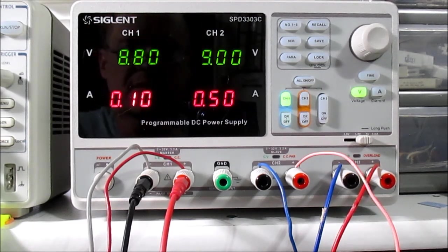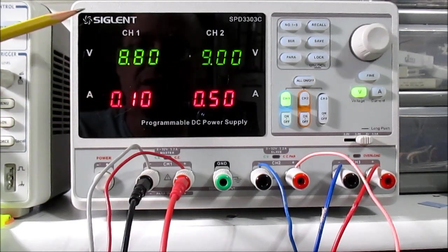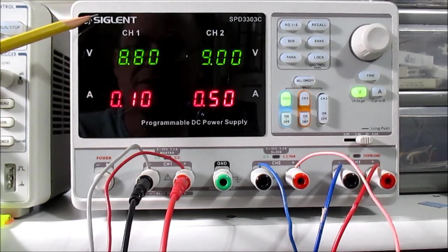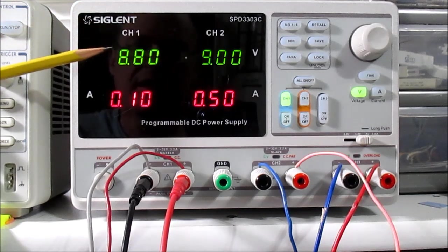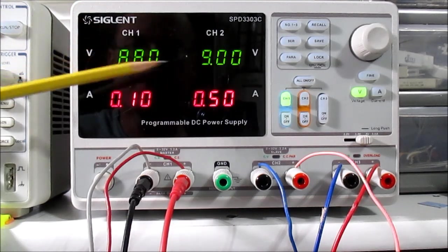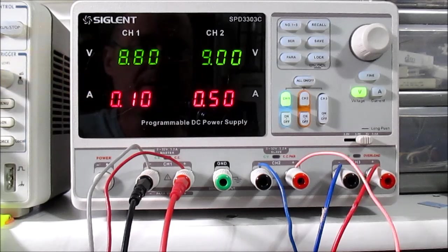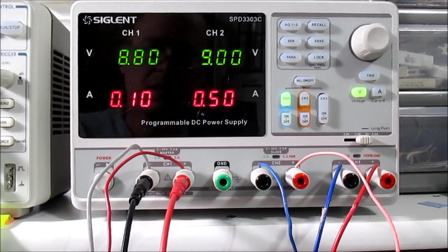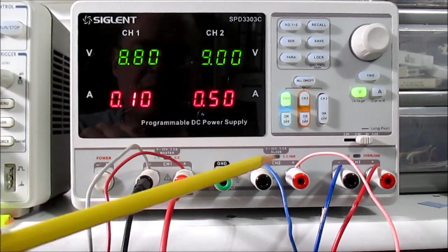Like I said, this is the most basic model Siglent sells of their power supply line. And it has an LED readout of voltage in green and current in red. It has three outputs.